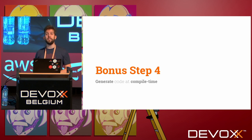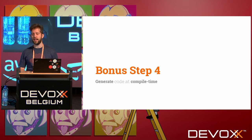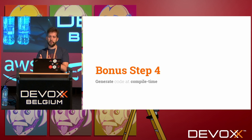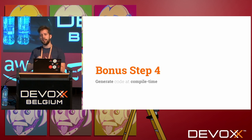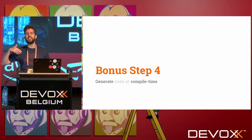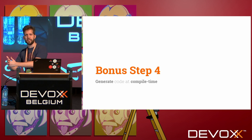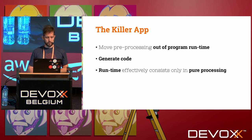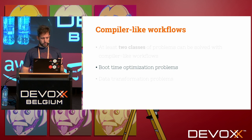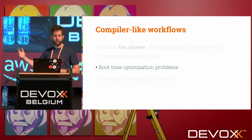Bonus step four: you can generate code at compile time. Because we have structured our phases so they can be moved around, we can decide to generate code instead of a data structure, which we then execute at a later stage — moving all phases from program runtime to compile time.